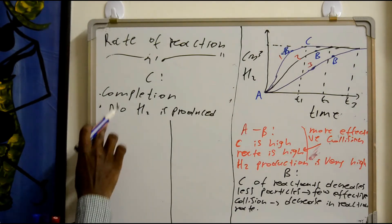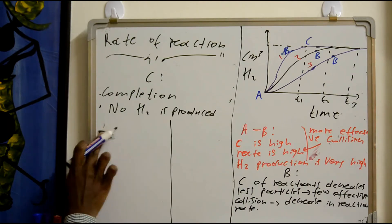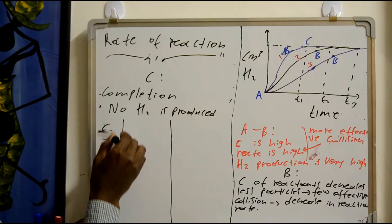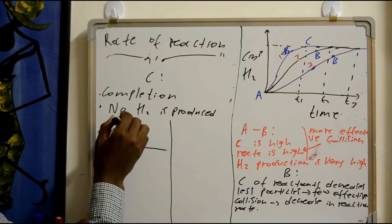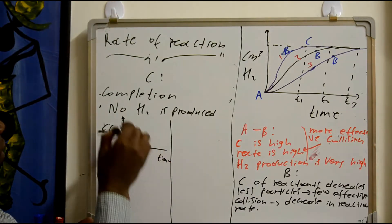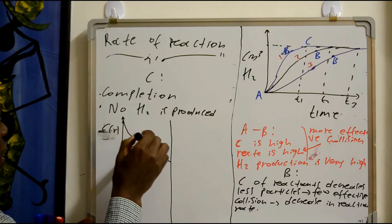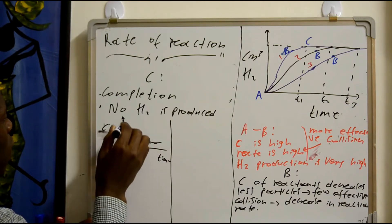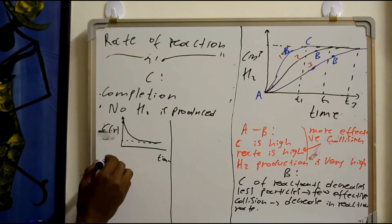So as a reactant — Mg — on the concentration-time graph, the concentration of the reactants — please note — the reactants: the concentration is highly high and it decreases to a certain value. So the concentration of the reactant, magnesium, it decreases.